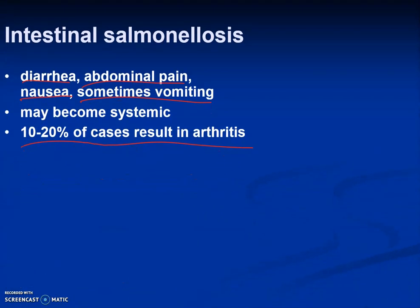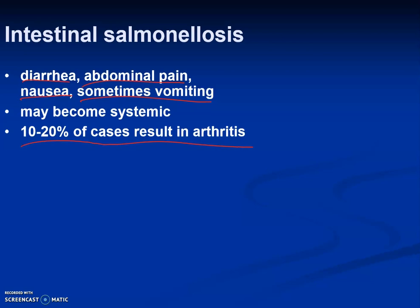Intestinal salmonellosis leads to symptoms including diarrhea, abdominal pain, nausea, and sometimes vomiting. It may become systemic, and in 10 to 20% of cases, it may result in arthritis.